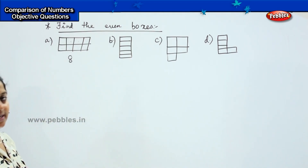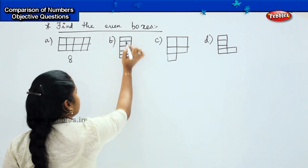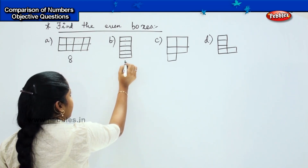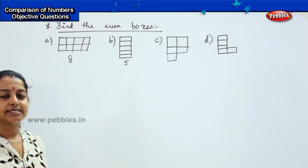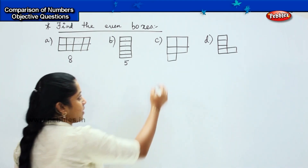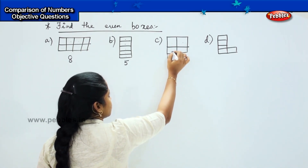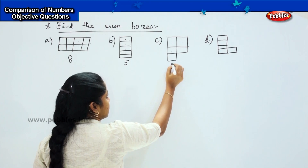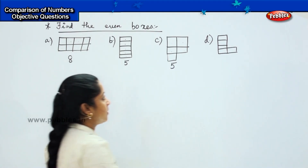How many boxes are there in B? 1, 2, 3, 4, 5. So we have 5 boxes here which is an odd number. Shall we count this one? 1, 2, 3, 4 and 5. Again it's an odd number.